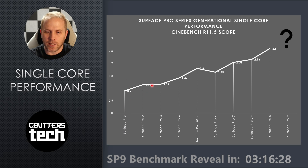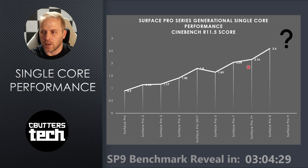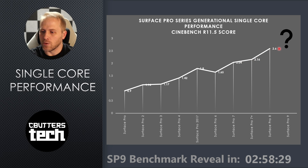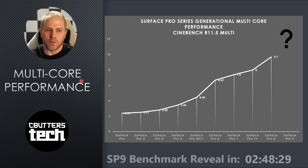Surface Pro 1 went to 1.14, 1.17 on Surface Pro 3, Pro 4 went to 1.42, and 1.8 on Surface Pro 5 — a really consistent uplift throughout the years — bringing us all the way to Surface Pro 8 with 2.6, which is almost three times the performance of the original. Pretty good. Let's look at multi core performance.